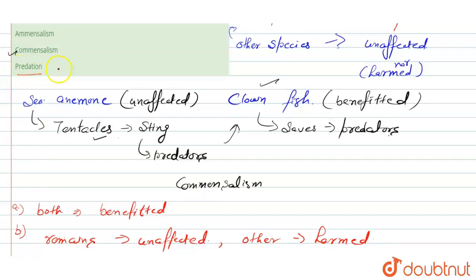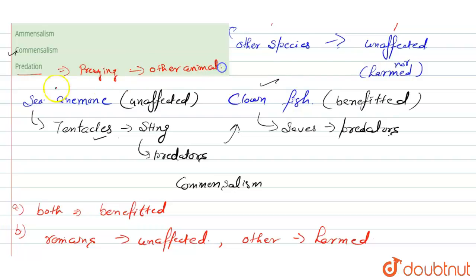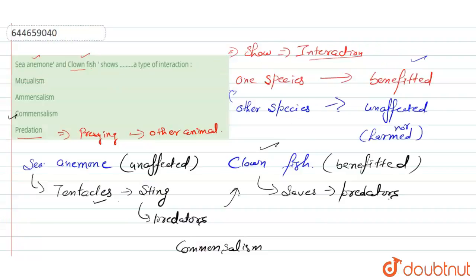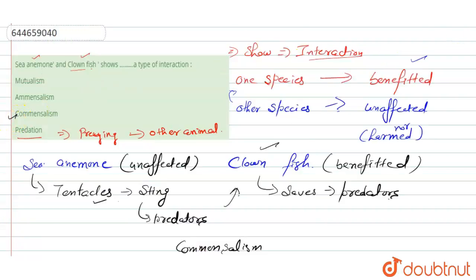Predation is the process where preying of one animal occurs by another animal. So the correct option for this question is commensalism.